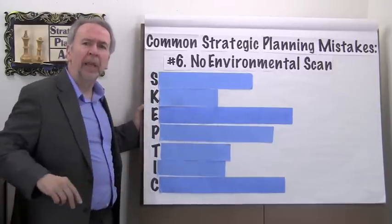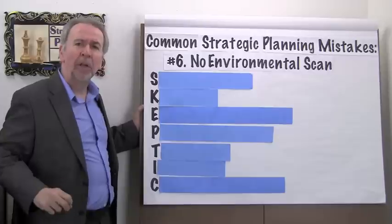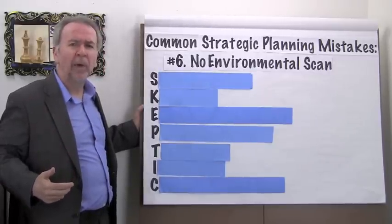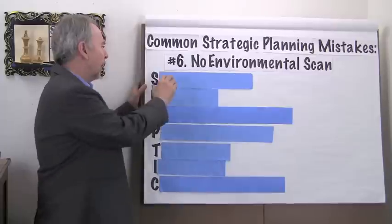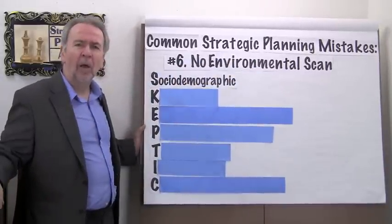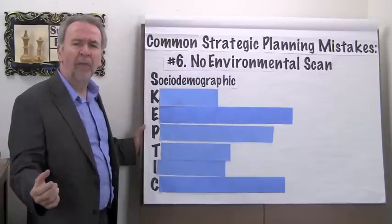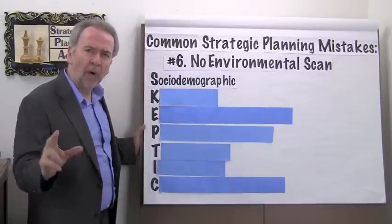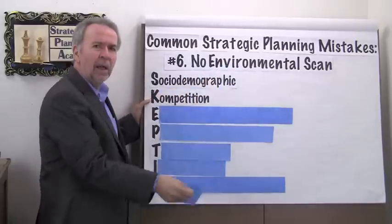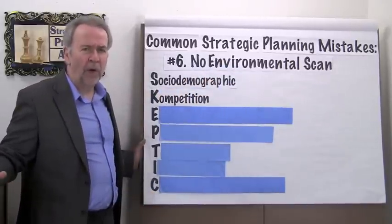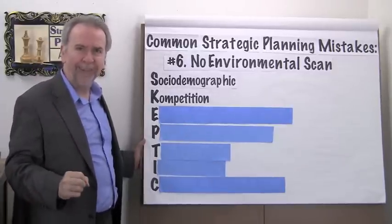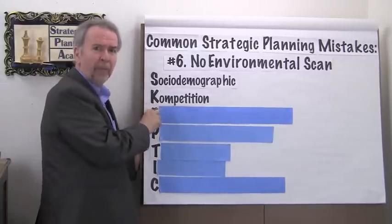Let's walk through the letters in SCEPTIC. When doing a future environmental scan, look ahead some three to five years and not just what's happening at the present. The S stands for socio-demographic — what are the socio-demographics of your clients, customers, and your workforce, and how are those changing? K stands for competition — I know it's a weird spelling, but it's also a German spelling.